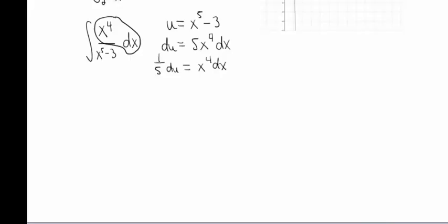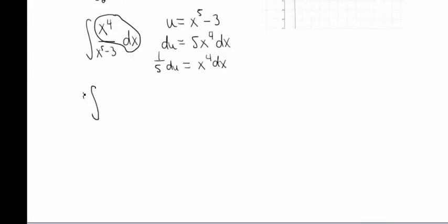So then when I rewrite my integral, that's going to give me then 1/5, pulling that constant out front, the integral of du over u. So hopefully you guys remember then that that's going to be 1/5 natural log of u plus c.